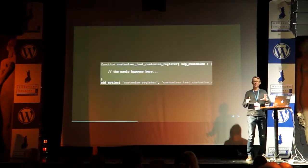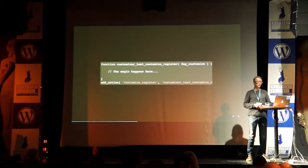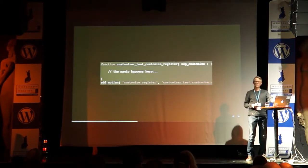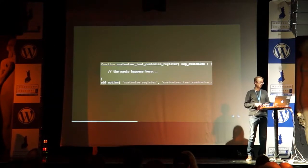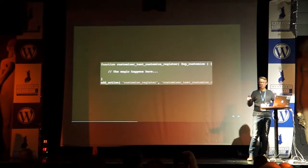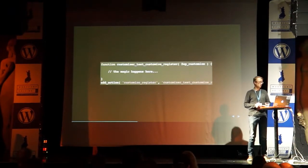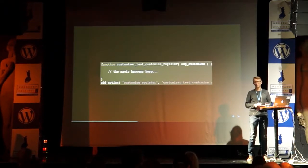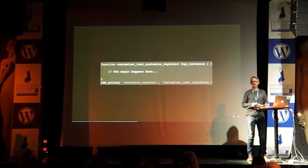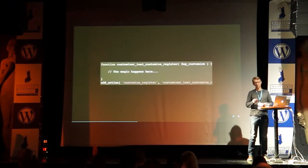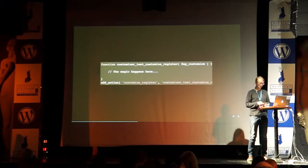All the magic happens inside the `customize_register` hook. All the code I'm going to be showing goes inside this function hooked into the `customize_register` action. We get a WP_Customize object that has methods for manipulating other objects in the customizer.